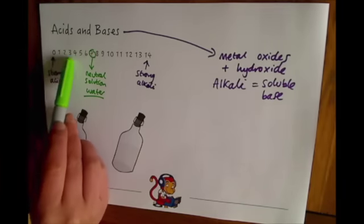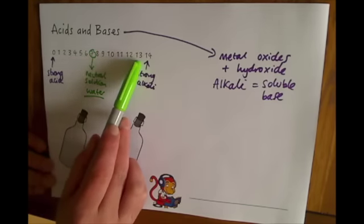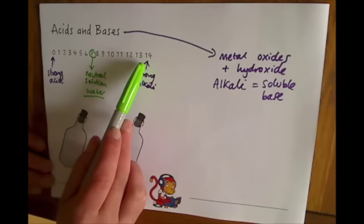And up from here, zero, one, two, three, four, five, six are all the acids, and eight, nine, 10, 11, 12, 13, 14 are the alkalis.